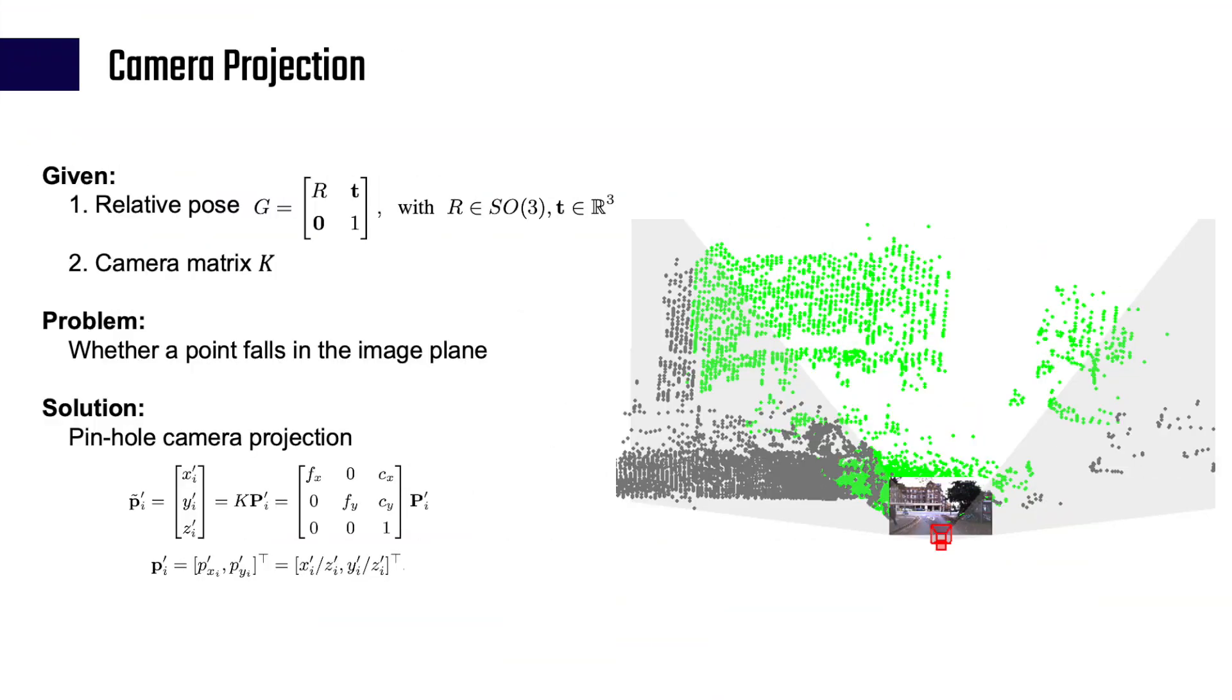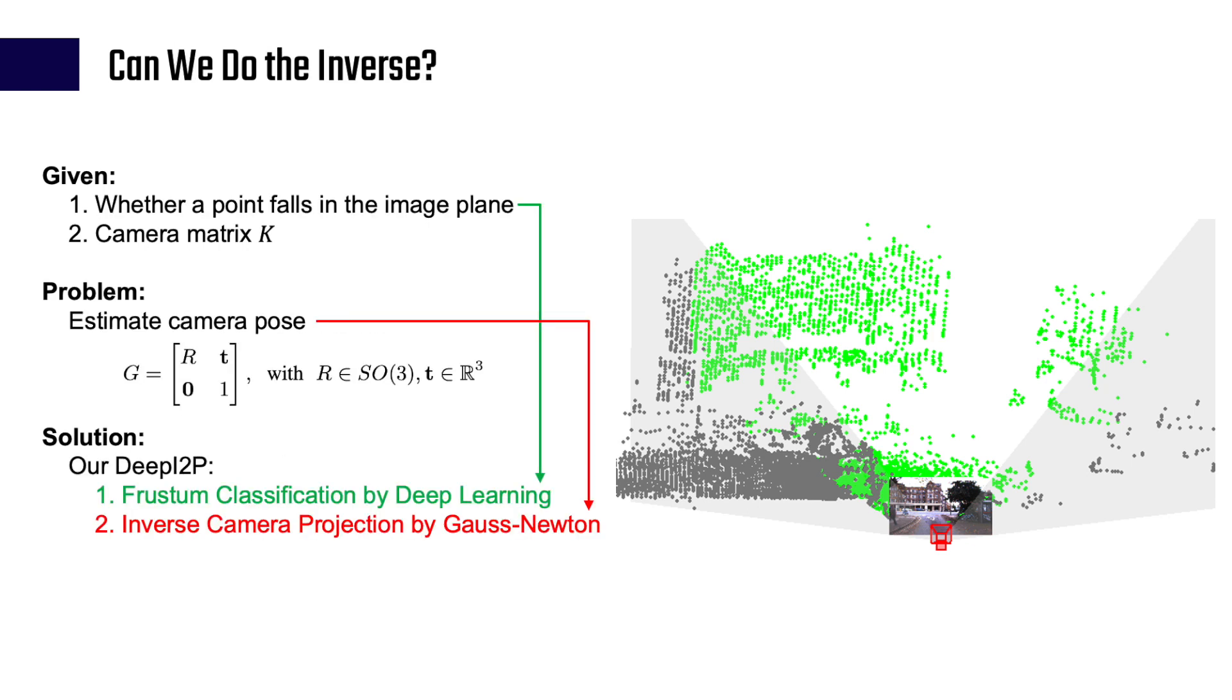The intuition is simple. The camera projection model is well known. Given the relative pose, we can easily figure out whether a point falls in the image plane or not. But can we do the inverse? That is, if we know whether a 3D point falls in the image plane or not, can we solve the relative pose between the point cloud and the camera? This question further breaks down into two problems.